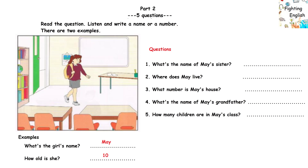There are two examples. Hello. I'm your new teacher. What's your name? It's May. How do you spell your name? M-A-Y. And how old are you? I'm ten now. Can you see the answers? Now you listen and write a name or a number.